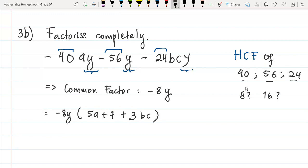So we have that, and that's the answer. We have negative 8y in bracket, all the rest in here: 5a, 7, and 3bc.